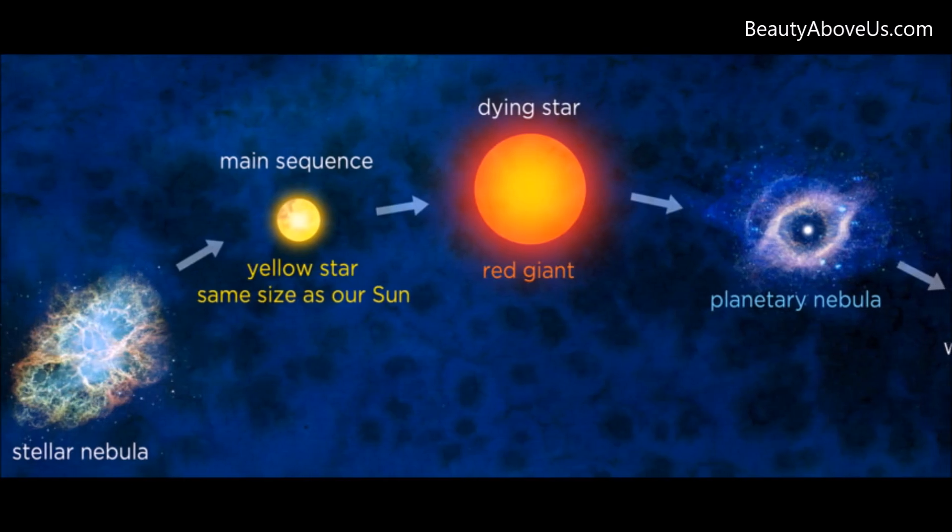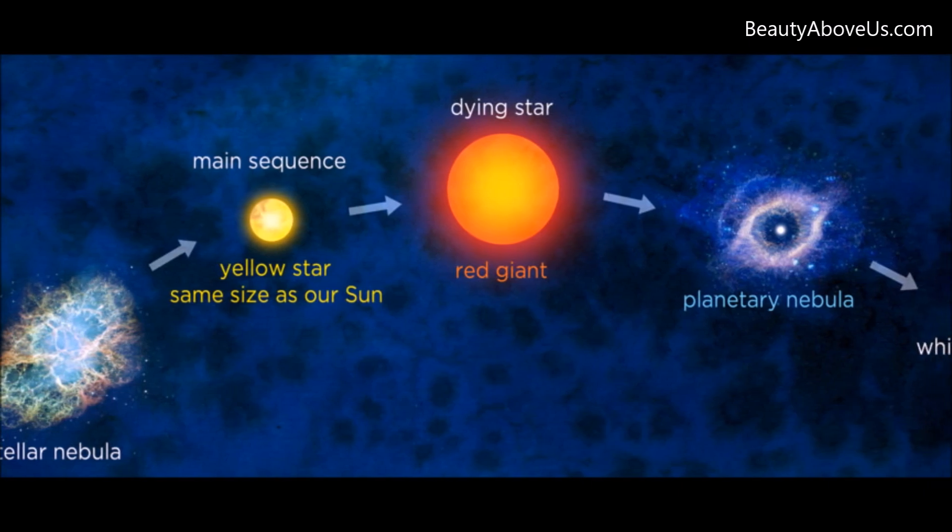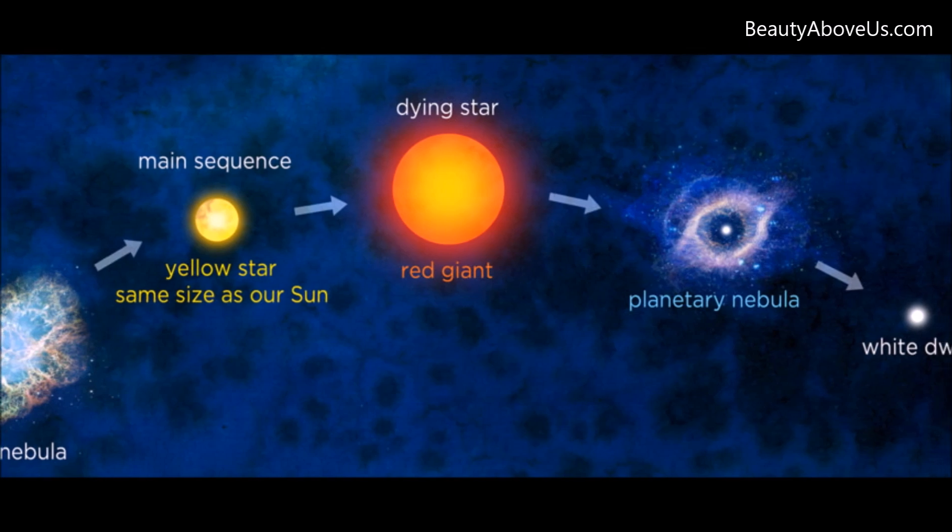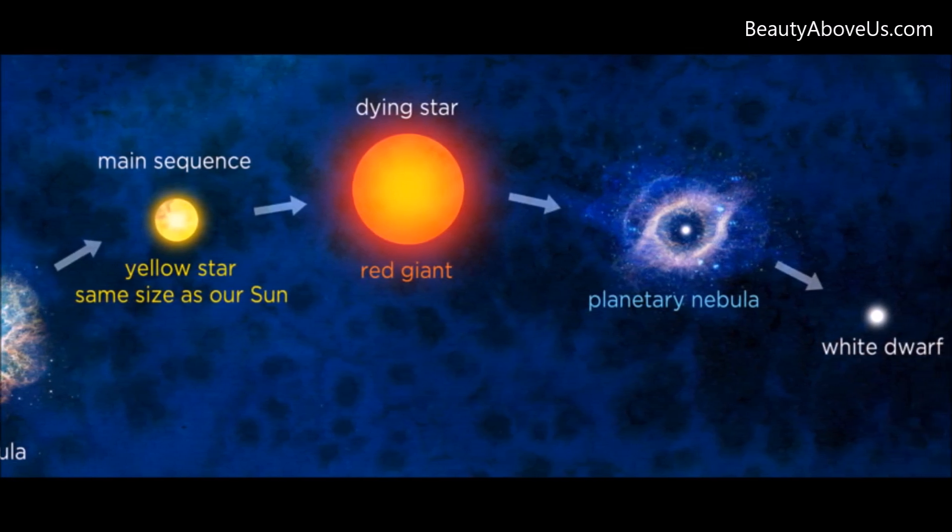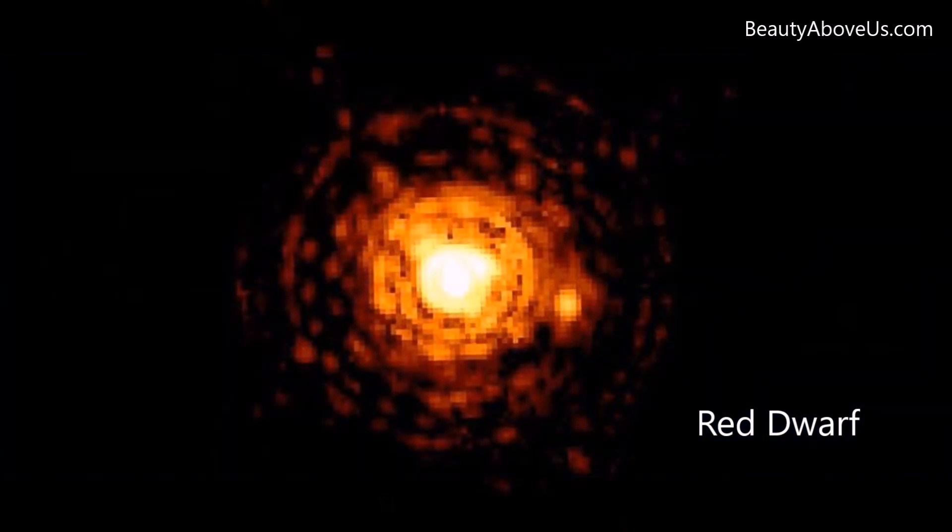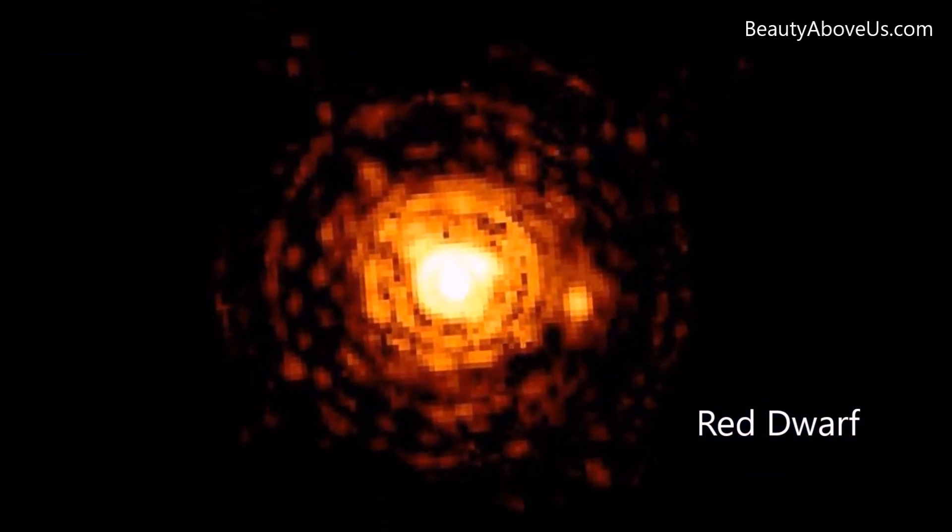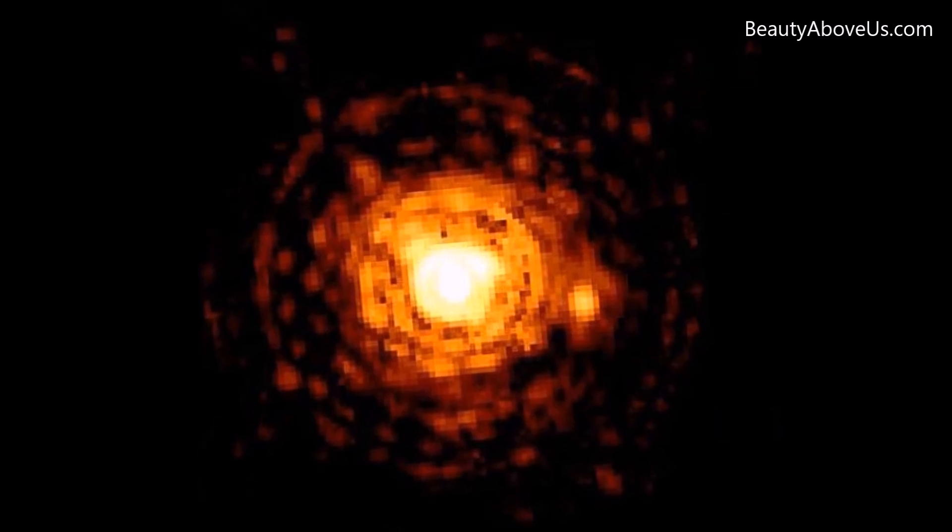A main sequence star is any star that has fusing hydrogen in its core and has a stable balance of outward pressure from core nuclear fusion and gravitational forces pushing inward. Red dwarf stars are the smallest kind of main sequence stars and are the most common stars found in the universe.